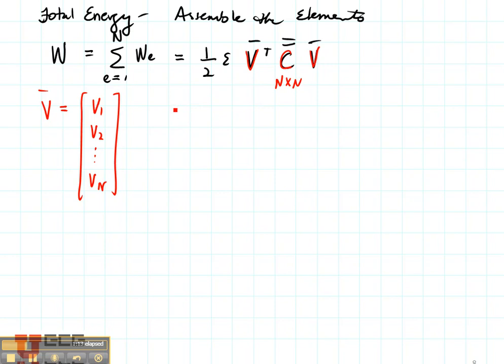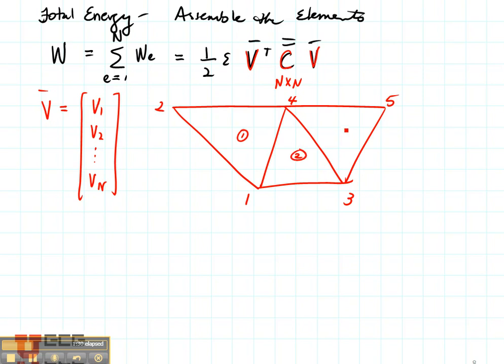So let's consider a case, for example, that looks like the truss on a bridge like this. So we have nodes one, two, three, four, and five. Those are the global nodes and we have elements one, two, and three.